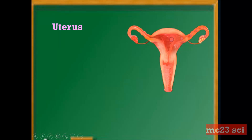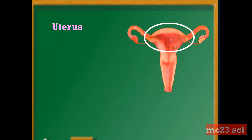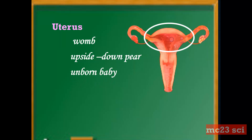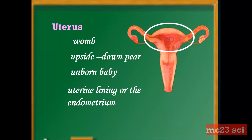Next is the uterus. This is also called the womb. It is a pear-shaped organ where the unborn baby is developed. It has a soft, smooth inner lining called the uterine lining or the endometrium.